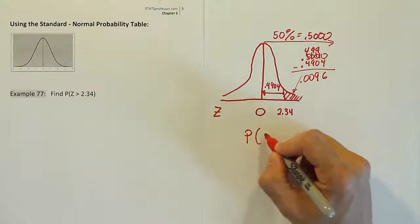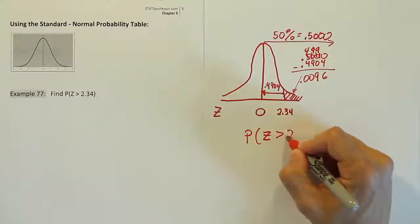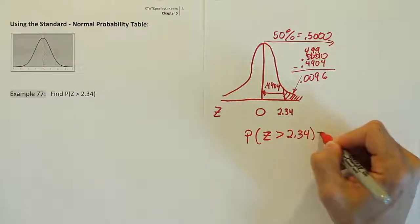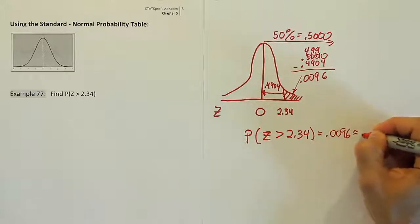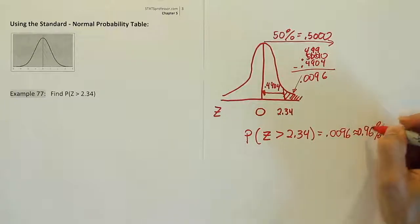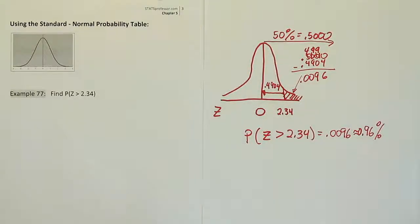The probability that Z is greater than 2.34 is simply 0.0096, or basically 0.96%. So not even 1%, but about 1%. If you rounded it, it would be 1%.